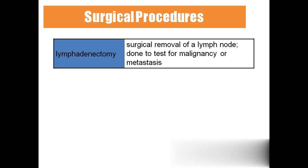Lymphadenectomy is the surgical removal of a lymph node. This is usually done for cancer of the lymph glands — if it is Hodgkin's lymphoma or non-Hodgkin's lymphoma, they will remove the lymphatic node.